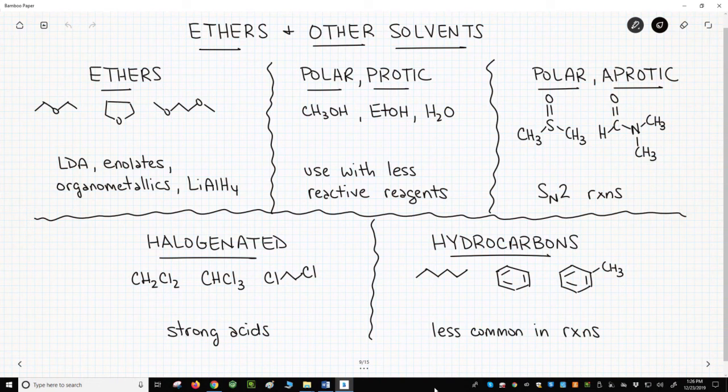In our first category, we have the ethers. There are many common ether solvents: diethyl ether, tetrahydrofuran or THF, and dimethoxyethane are among the classics. Ethers are unstable in strong acids, but they are very resistant to bases. They are used with LDA, enolates, organometallics like Grignards, and lithium aluminum hydride.